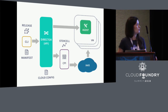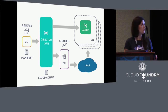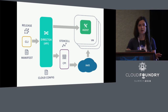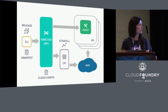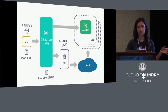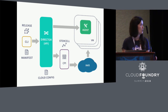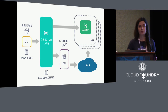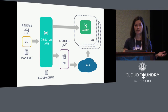BOSH creates VMs from a set of predefined templates which we call stem cells. You can think of a stem cell as an AMI for AWS, for example. At its core, a stem cell is a base OS image with some hardening on top of it and a BOSH agent. The BOSH agent is a process that runs on every VM. We officially support stem cells for multiple infrastructures — you can download them at bosh.io. They are constantly released with new security updates to the kernel and base OS packages.